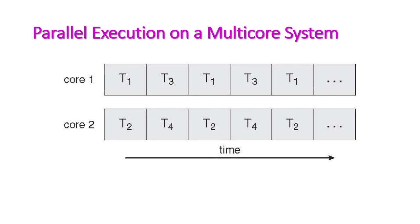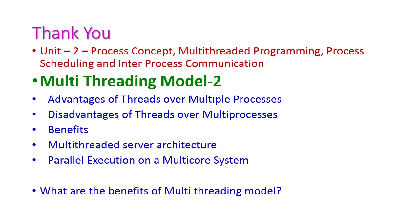This diagram explains parallel execution on a multi-core system. Here we have two cores: core 1 is shared by task 1 and task 3, and core 2 is shared by task 2 and task 4. Simultaneously, two tasks execute on each core, so execution time is greatly reduced. We have now covered the second part of the multi-threading model. Students, please write the answer for 'What are the benefits of the multi-threading model?' in the comment box. In the next class, we will see another part of the multi-threading model. Thank you.